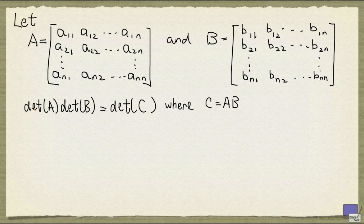What we're going to do is give a sketch of the following result. If you take the product of the determinant of A and determinant of B, it is the same as the determinant of the product of A and B. Here I use C to denote the product of A and B.